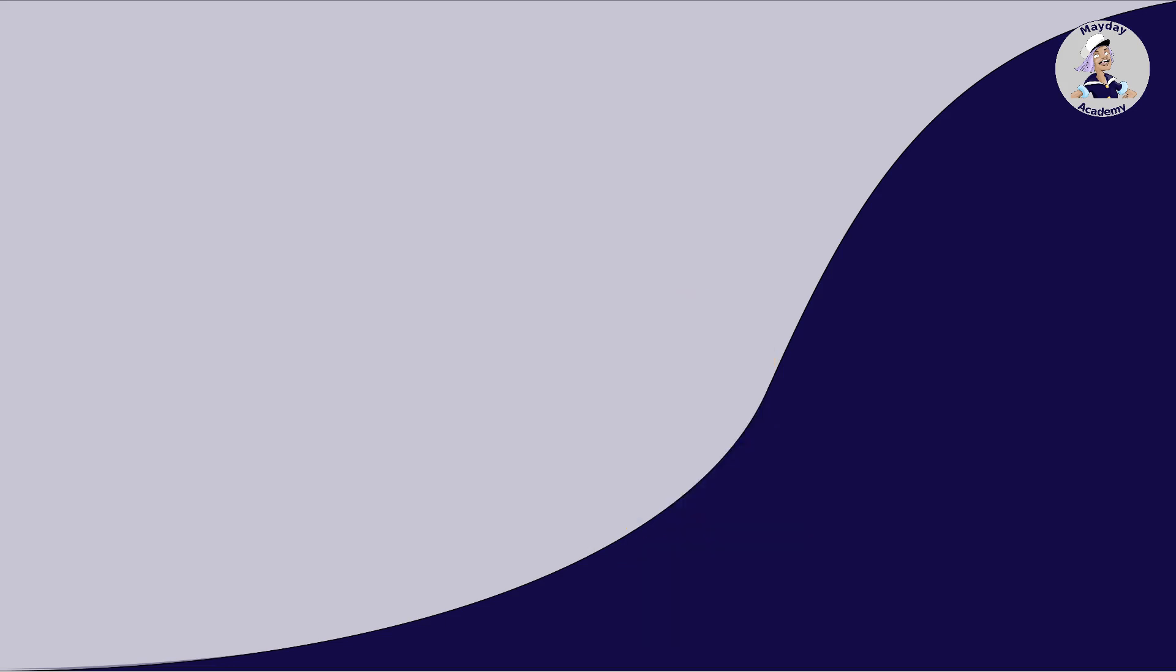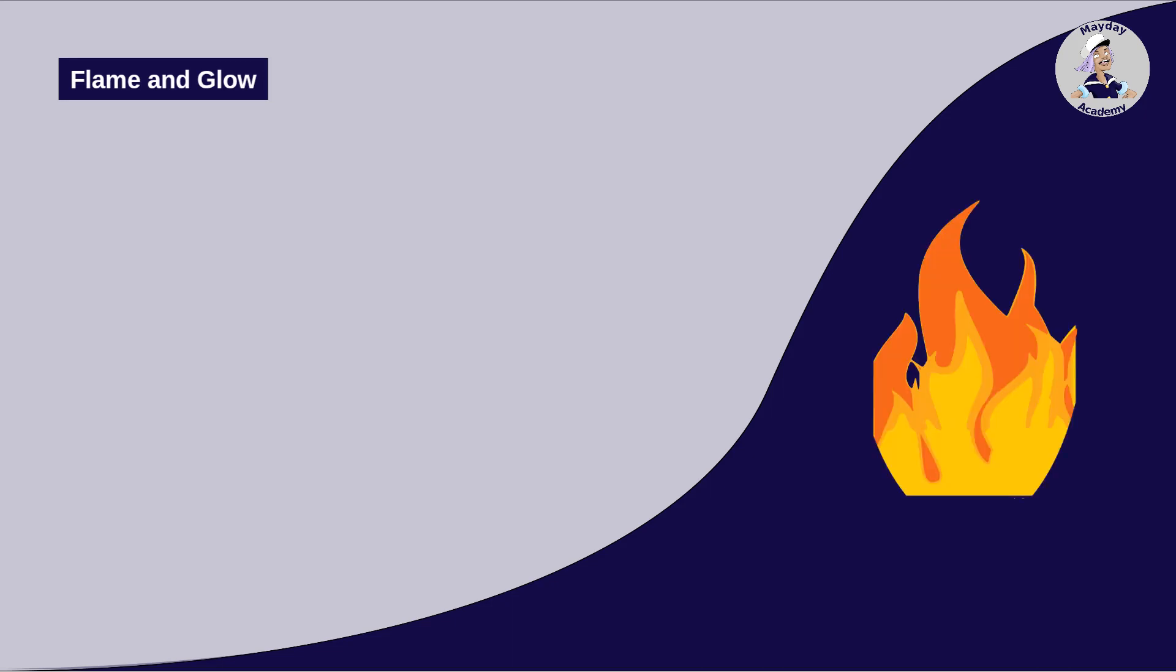Flame and glow. The heat released during combustion creates a flame through the emission of light from the combustion gases. Electrons of the heated particles temporarily reach a higher energy level and fall back to their original energy levels after a short time, releasing energy in the form of a light quantum.